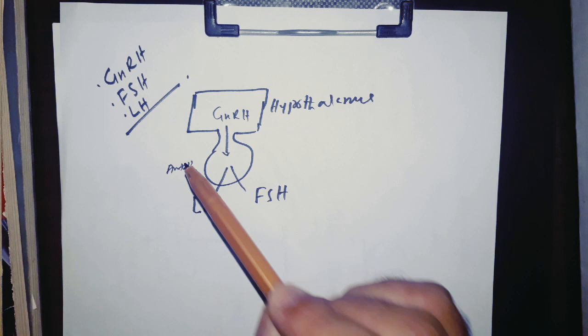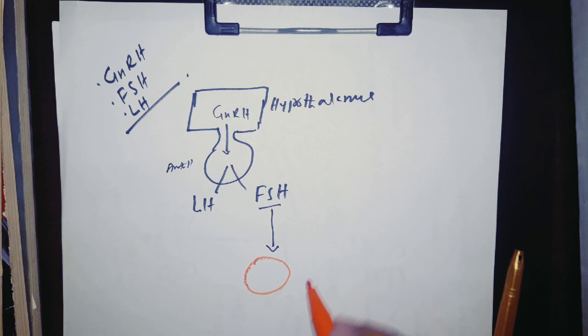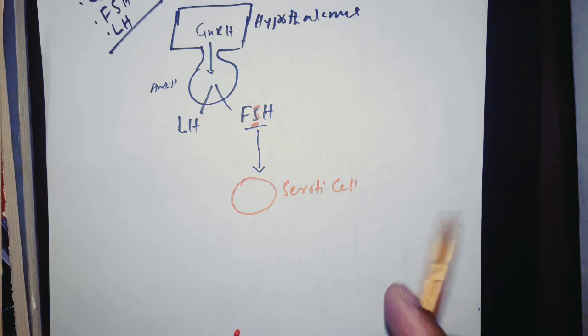FSH is going to act on Sertoli cells. In the word FSH there is S, so this S is for Sertoli cells. Now at the end of Sertoli there is word I, so this I will be for inhibition or secretion.